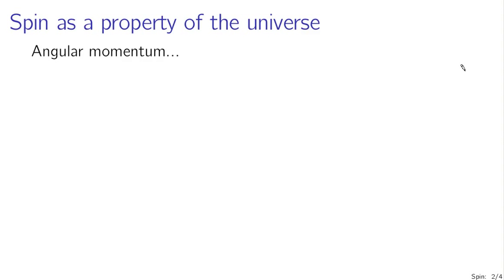Spin is essentially a property of the universe — that's just the way things are. I don't have a good answer for why an electron has spin, but I can describe the spin of the electron using the same language as we used when we were discussing angular momentum.